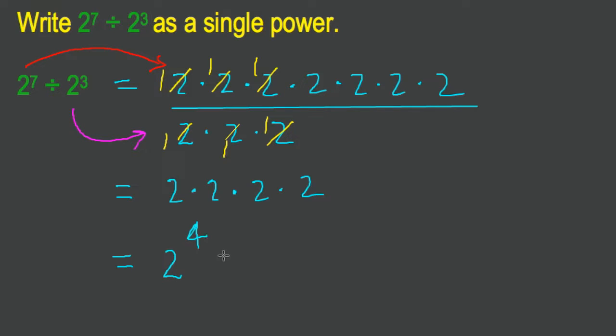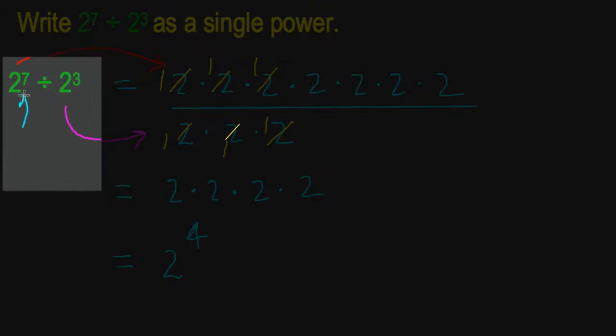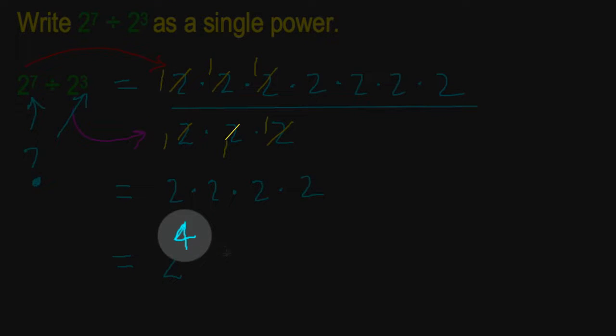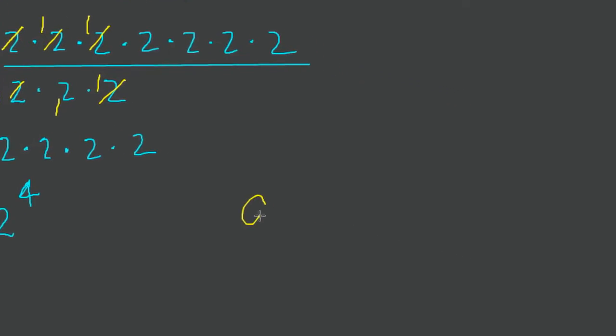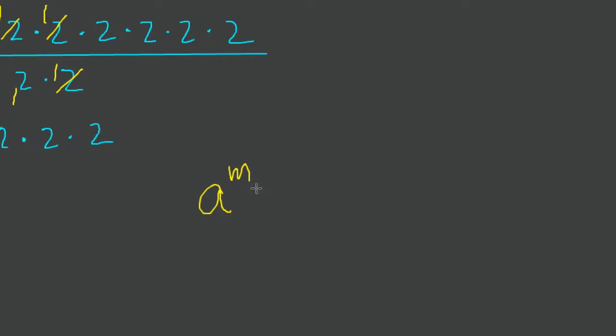Now, many of you are looking at this and saying, wait a second, isn't there a connection between the 7 and the 3? Don't we have a connection there to this 4? Well, absolutely. And that leads us to our second rule. It looks like this: a to the exponent m divided by a to the exponent n is a to the exponent m subtract n.